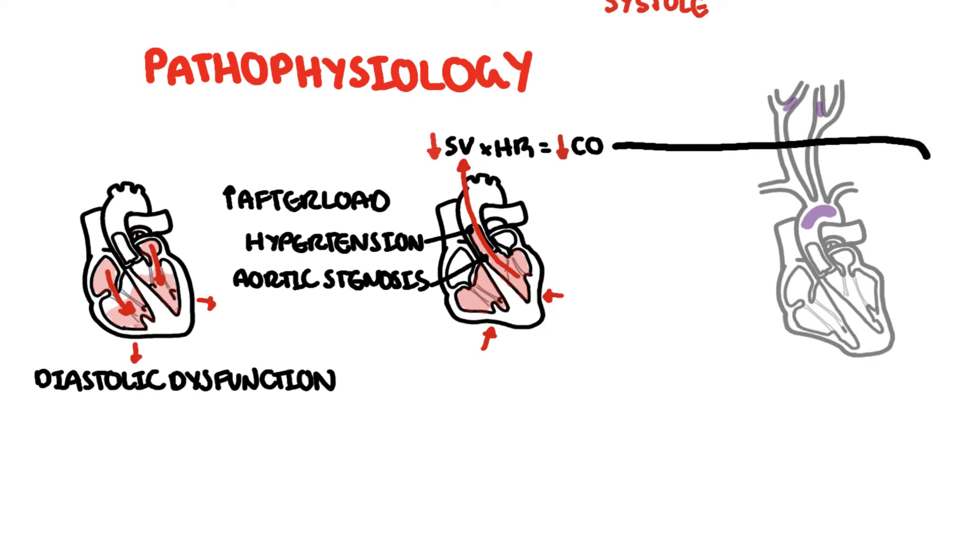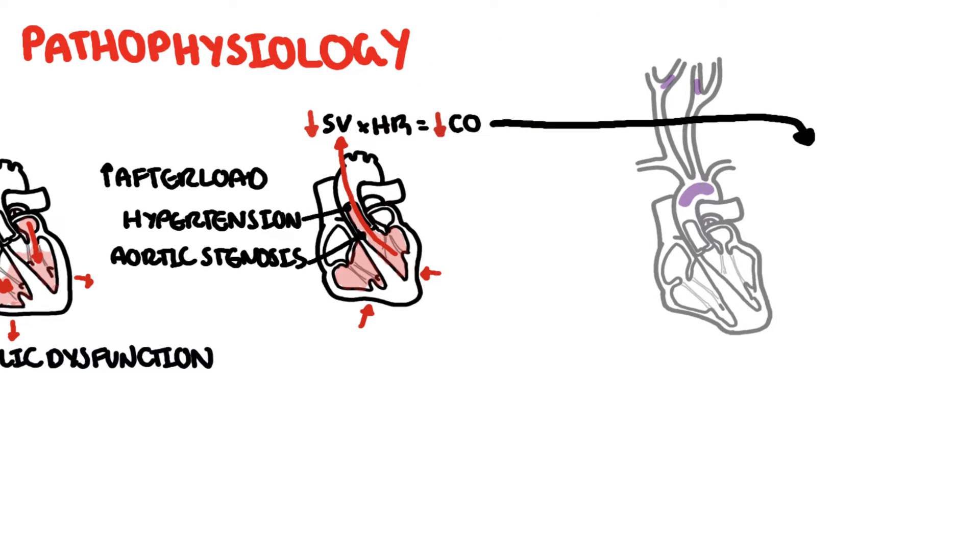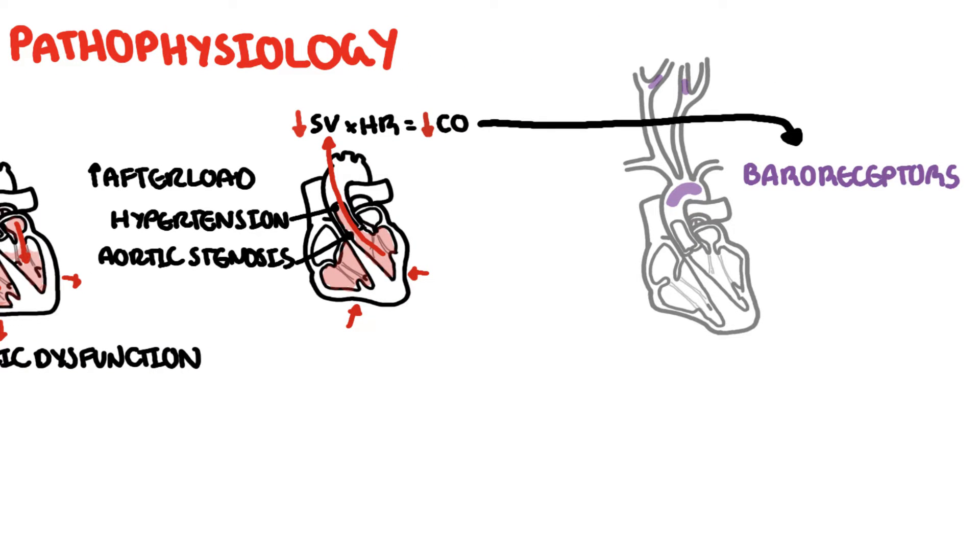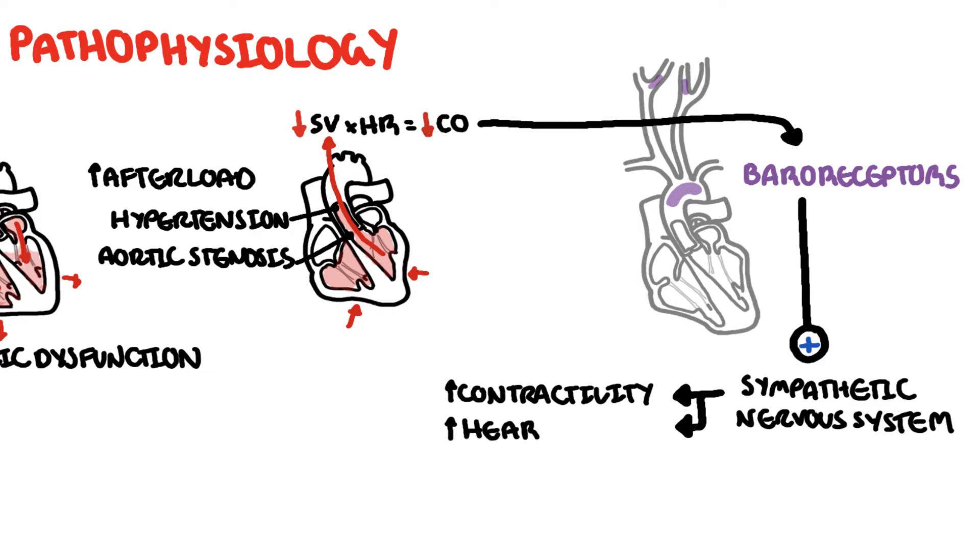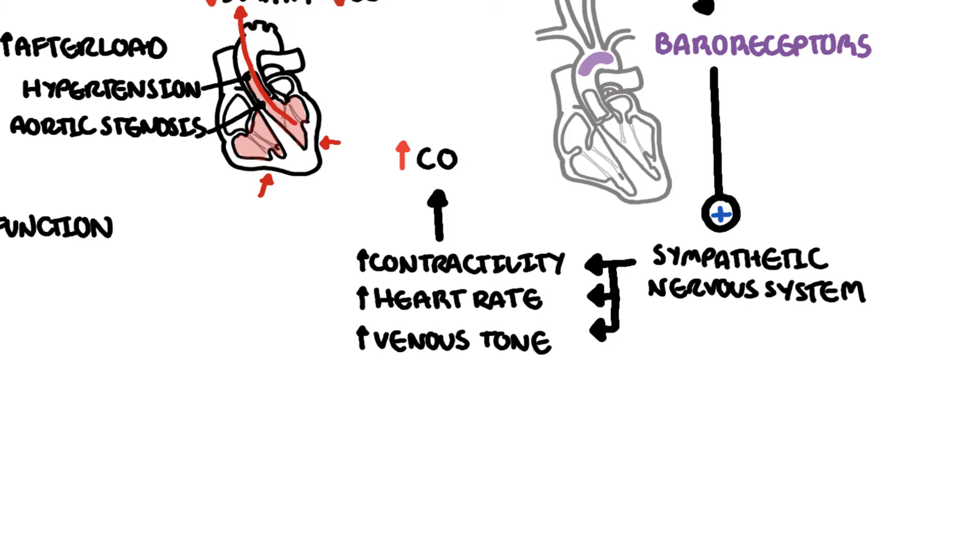A reduced cardiac output will be picked up by baroreceptors. The baroreceptors will then trigger activation of the sympathetic nervous system, which will subsequently increase contractility of the cardiac muscles, increase the heart rate and venous tone. These are all done to help increase cardiac output. Long term, however, these changes cause ventricular remodeling and dysfunction.